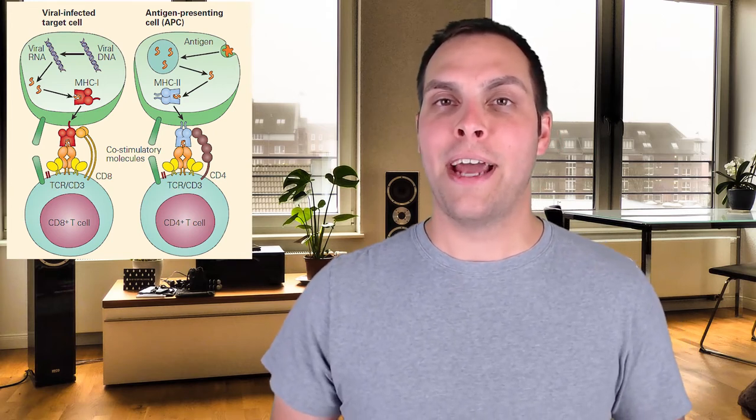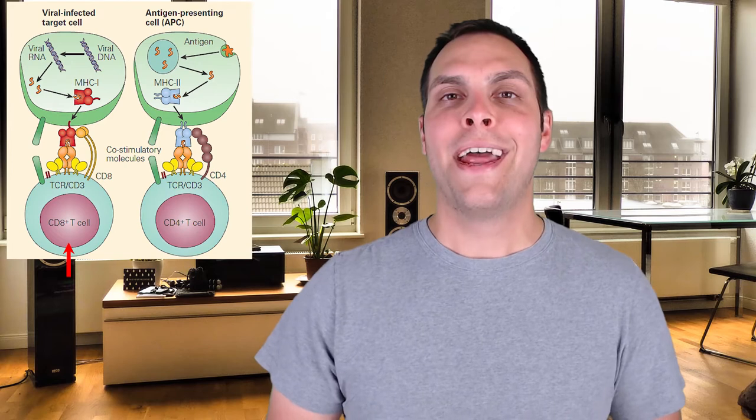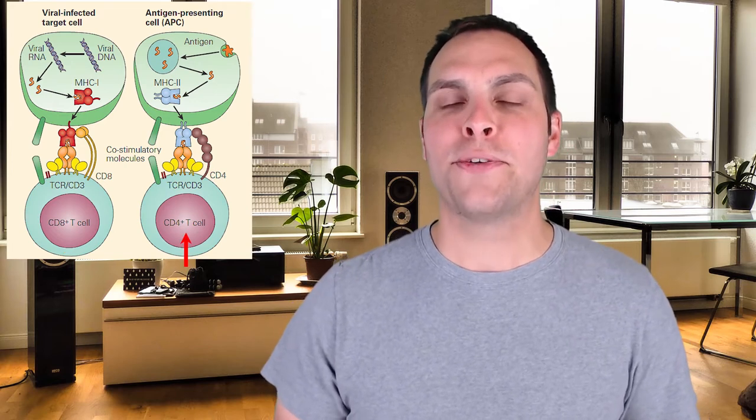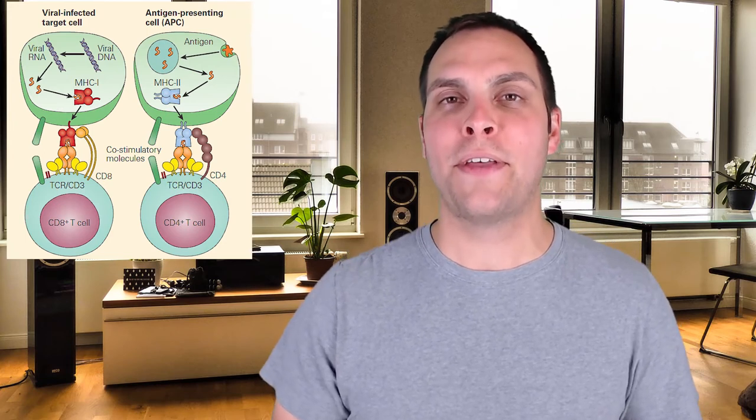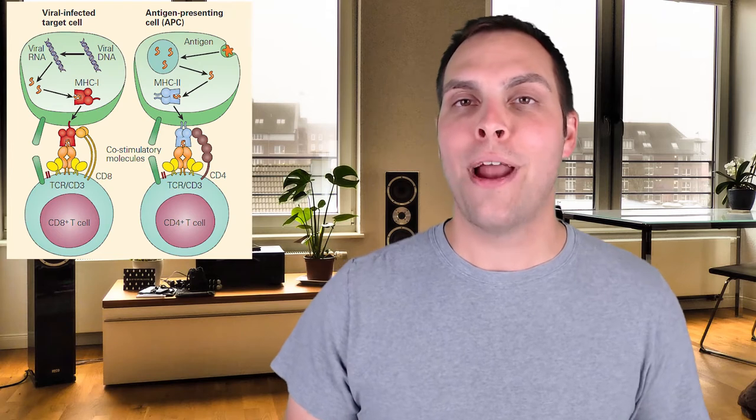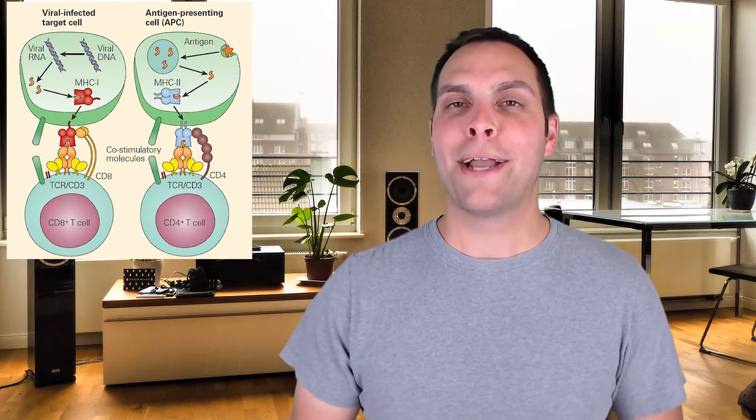In the lymph node there are going to be naive killer T cells and naive helper T cells. We'll focus first on what's going on with the helper T cells. Helper T cells are particularly interested in what an antigen presenting cell displays in its class 2 MHCs on the surface — what that antigen presenting cell has eaten. But how does a helper T cell know specifically which MHC it's reading, MHC 1 or MHC 2? To understand that, we've got to back up a little bit.